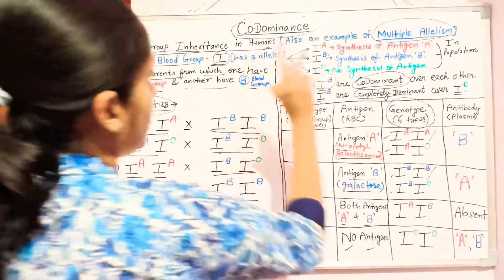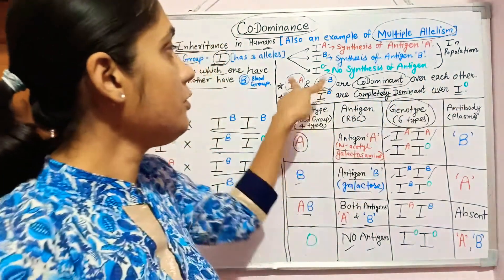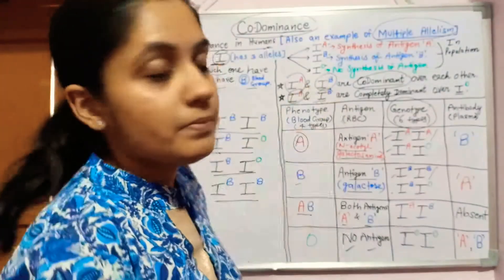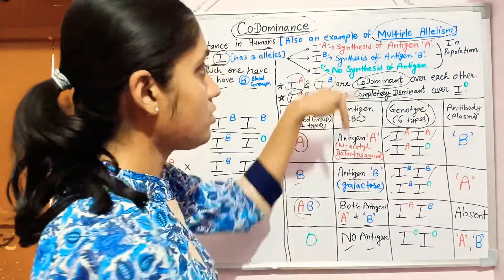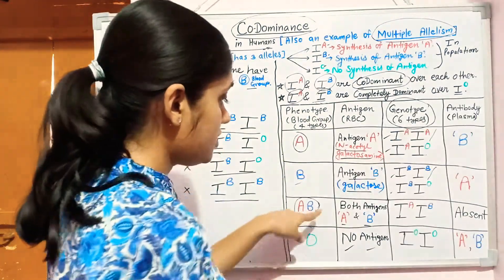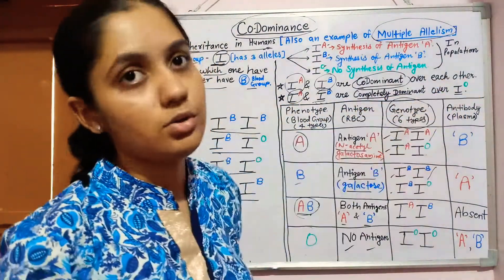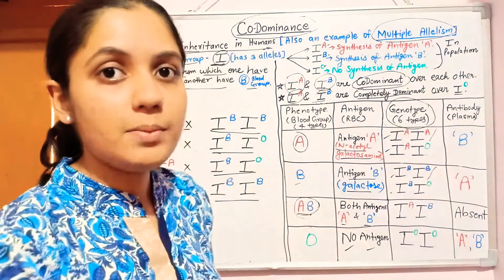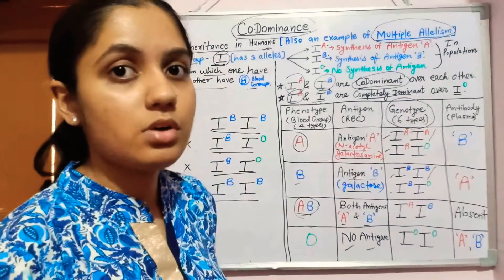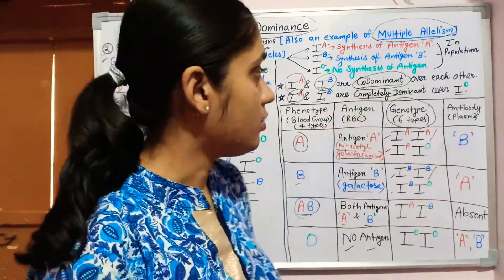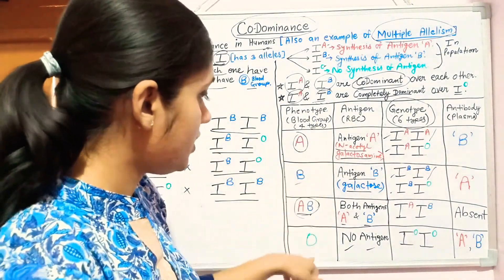I^A and I^B are co-dominant over each other: if I^A and I^B are present together, both express independently, so the blood group is AB — not A, not B, not a mix, but AB. I^A and I^B are both completely dominant over I^O: if I^A is present with I^O, the blood group is A; if I^B is present with I^O, the blood group is B. There are four blood group phenotypes: A, B, AB, and O.